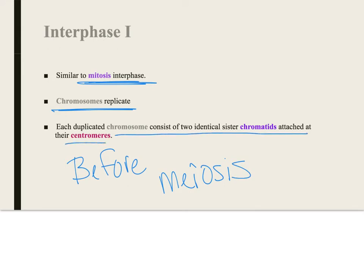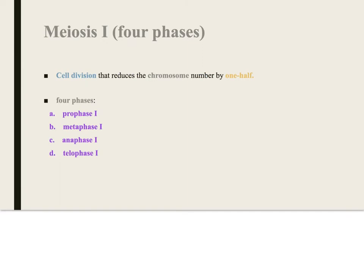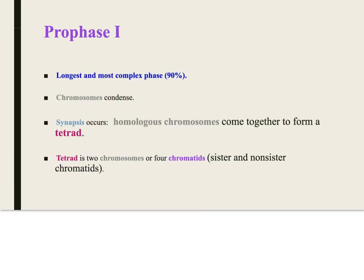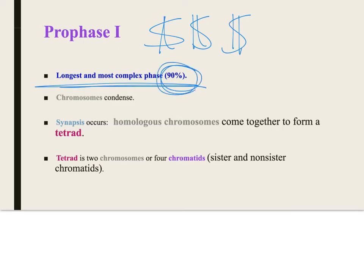Then you have meiosis 1: prophase 1, metaphase 1, anaphase 1, telophase 1. The cell division reduces the numbers by one half. You're going from diploid to haploid, you're going from 46 to 23. This is the money - prophase 1. Longest and most complicated phase. 90 percent of a cell's time in meiosis is spent in prophase 1.